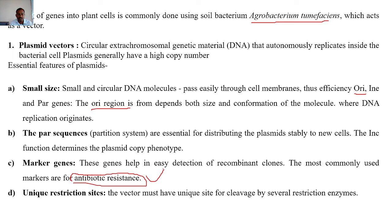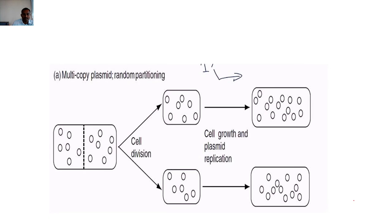The next feature is the unique restriction site. In PBR322, when we have multiple restriction sites, we can use enzymes like HindIII and EcoRI. A restriction site is where restriction endonucleases cut the DNA at a particular specific site. The plasmid vector must have a unique site for cleavage — to cut the DNA so that foreign DNA can be inserted. Multiple-copy plasmids also undergo random partition in bacteria.